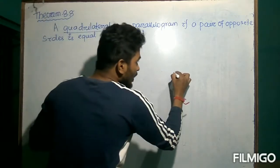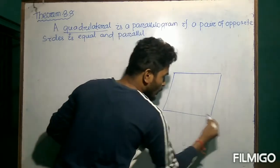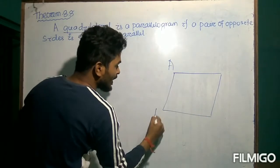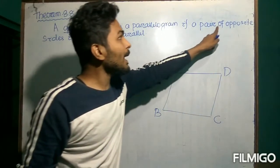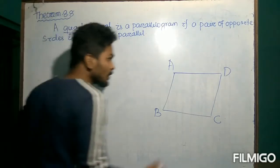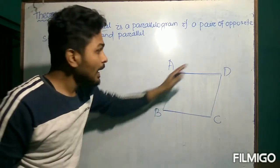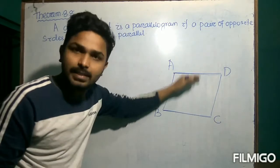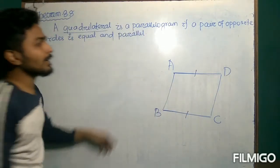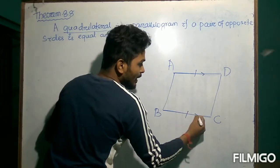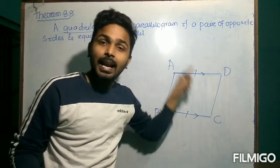So, if there is a quadrilateral — not a parallelogram, only a quadrilateral — and in this quadrilateral, if we consider AD and BC, only these two sides: if these two opposite sides are equal, this side is equal to this side, and parallel, this side is parallel to this side, then we have to prove that this quadrilateral is a parallelogram.